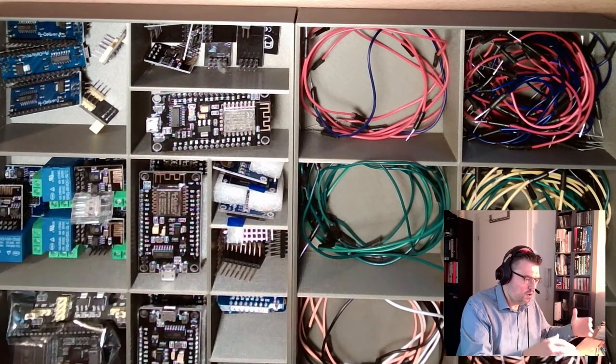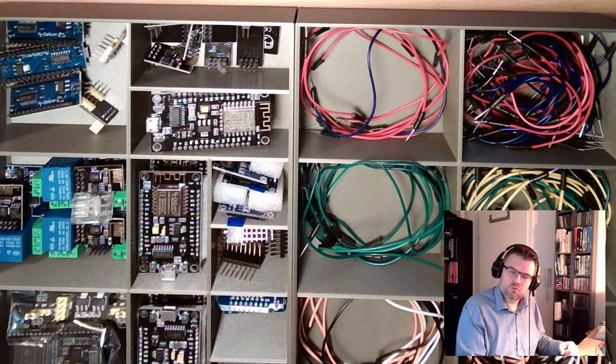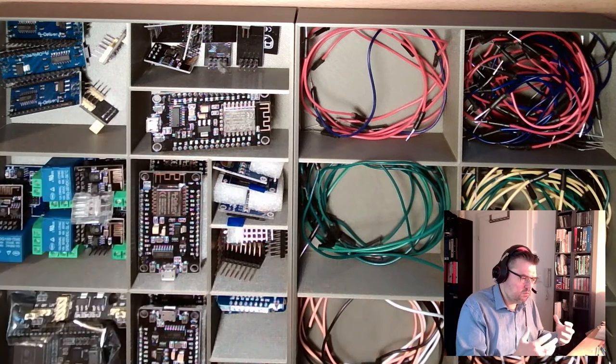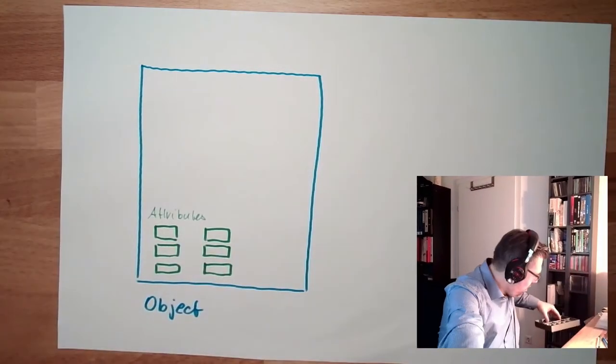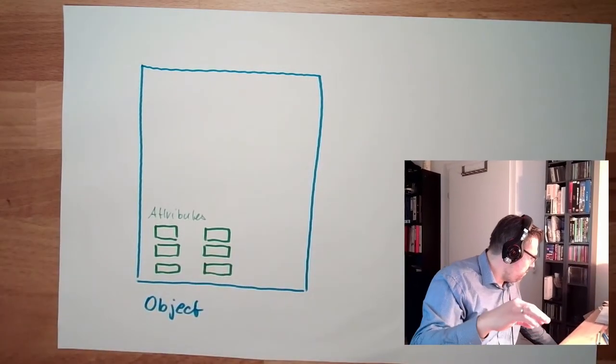So this is describing the situation, or this is describing the object simply. There are attributes, the object is described by attributes.